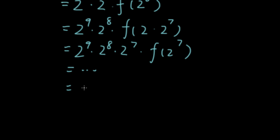So on and so forth. And we would have 2^9, 2^8, 2^7, and including 2^2 and 2 times f(2). Now we know that f(2) is 1.